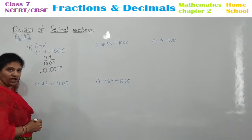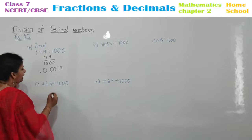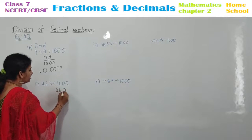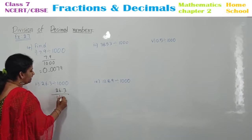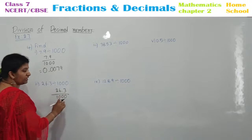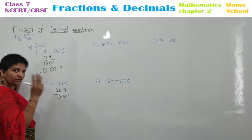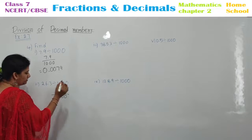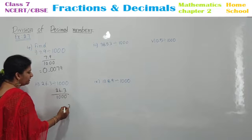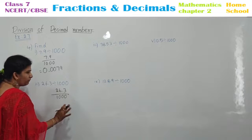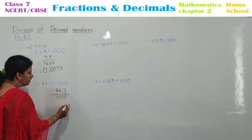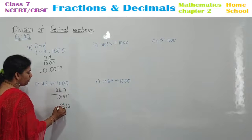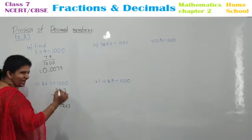26.3 divided by 1000. How can you write this? 26.3 by 1000. Thousand has 3 zeros, so this point should be shifted after three values. Write the 3 here. Start counting — 1, 2, 3 — put a point and write 0. This is your answer.